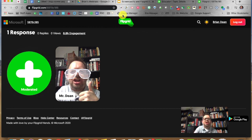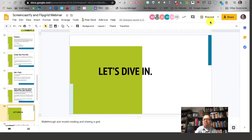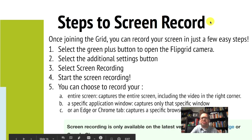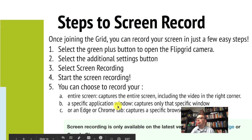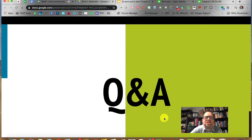They would click there and record their video response. You'll notice it says moderated — no other student would see their video until I moderate it. So that is Flipgrid in a nutshell. We're about to start taking Q&A. The one thing I wanted to note is that screen recording is only available on the latest version of Microsoft Edge or Google Chrome — it won't work in other browsers. I'm going to hop over to the chat and see if there are any questions.